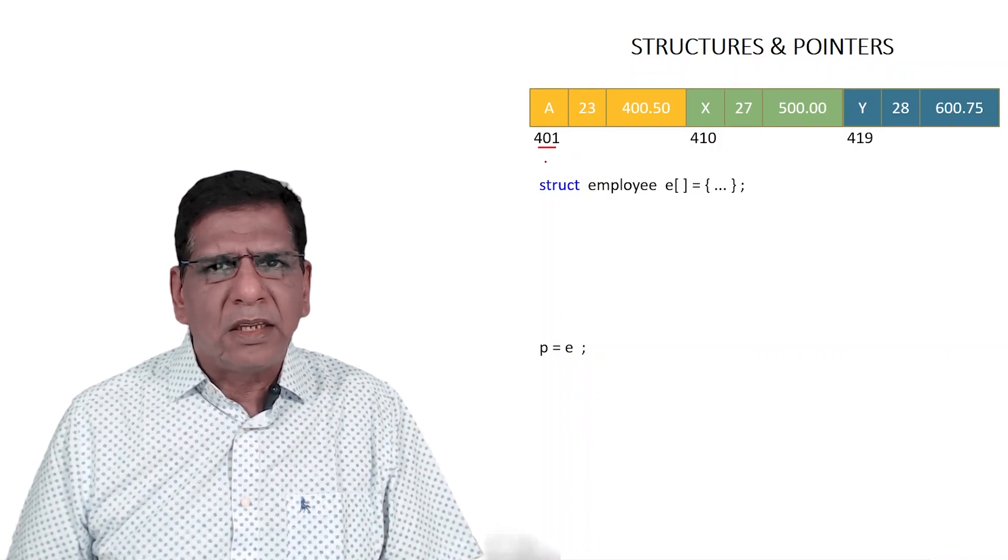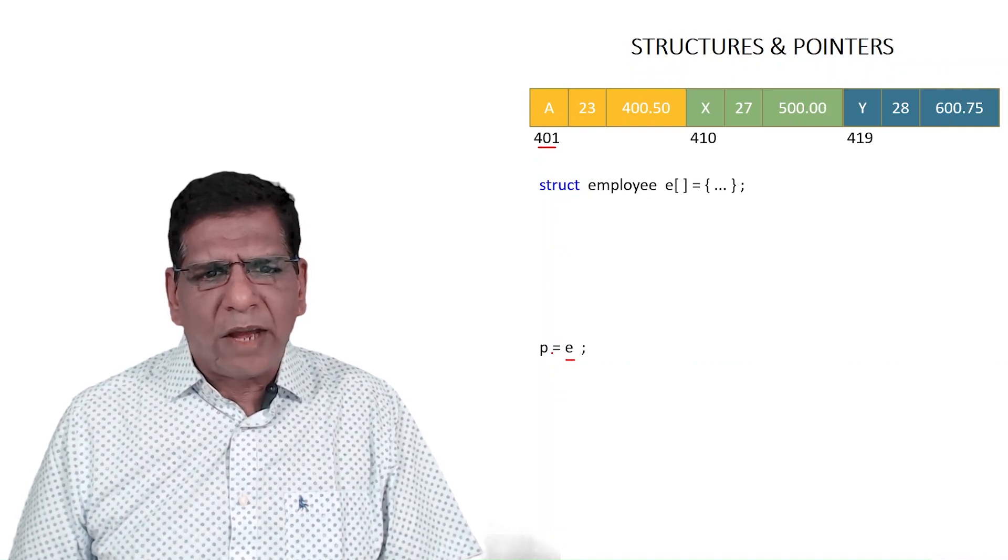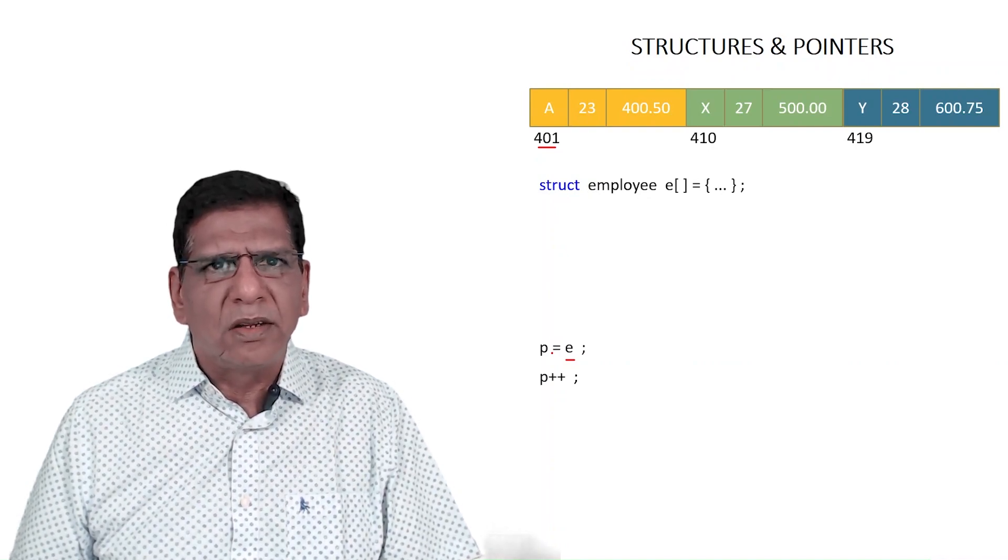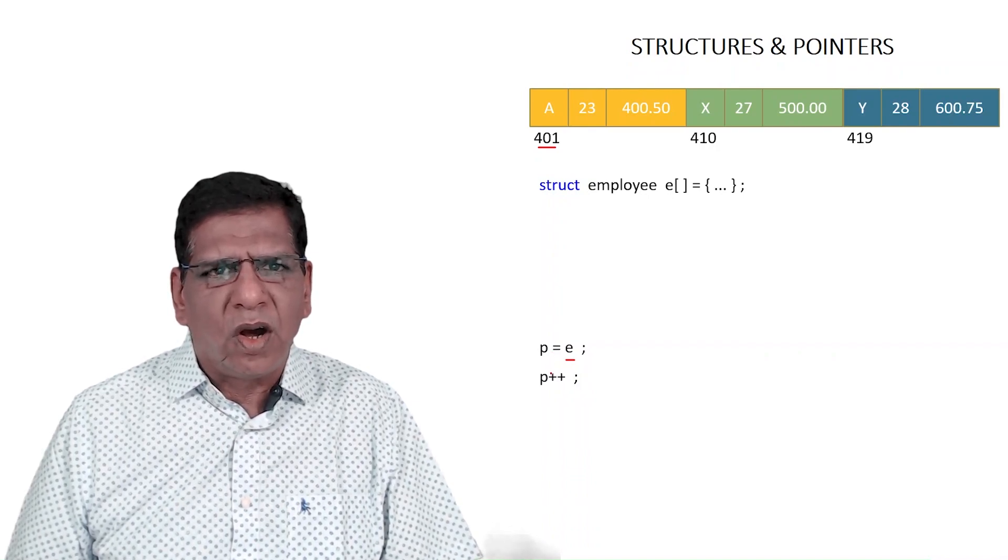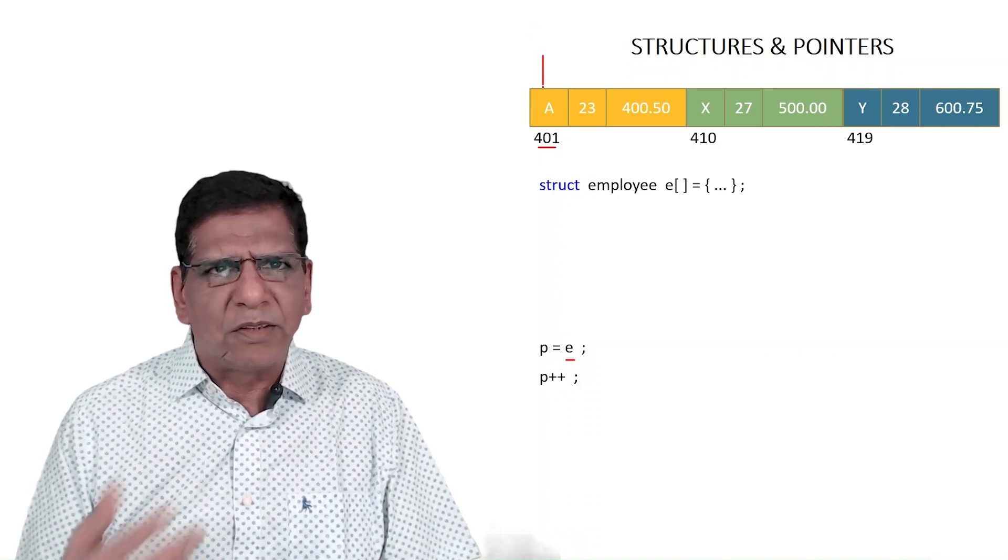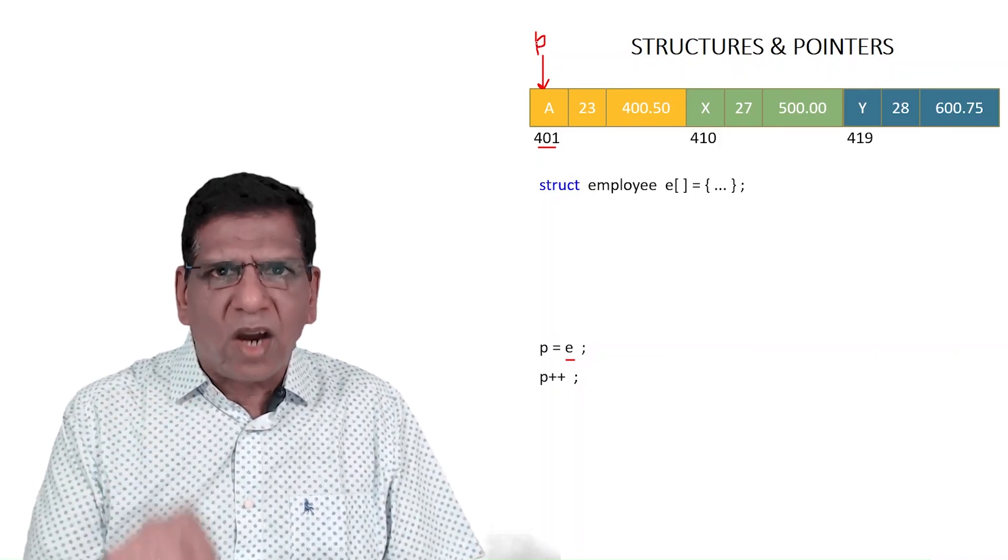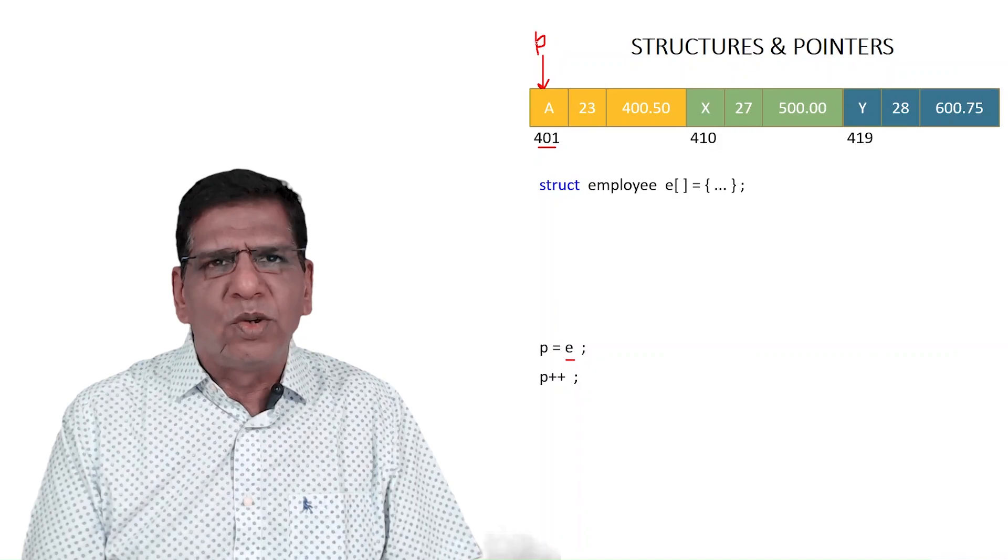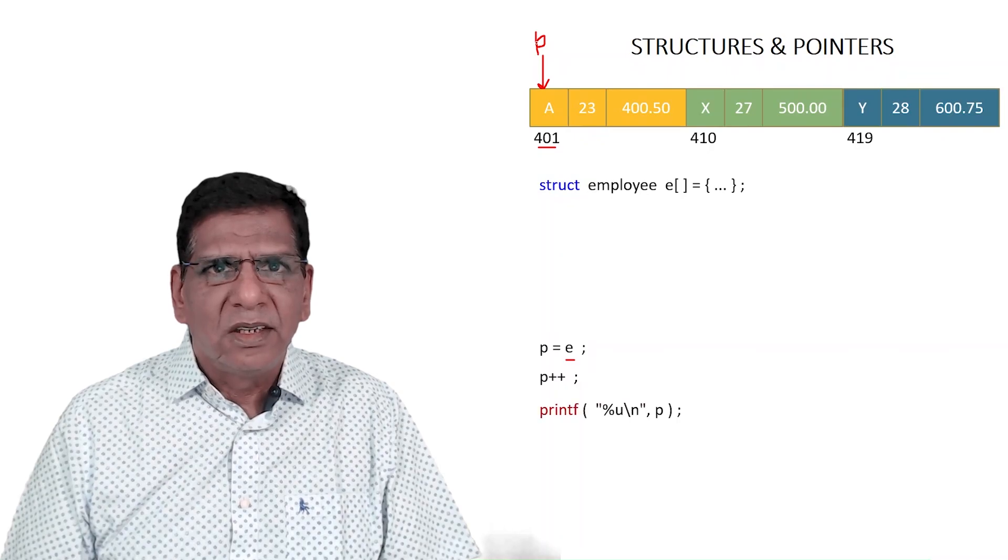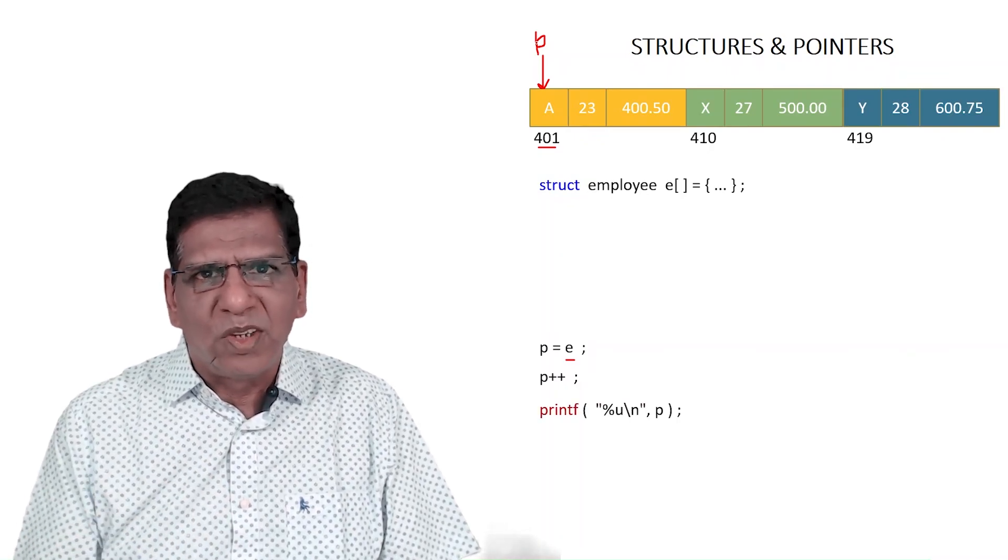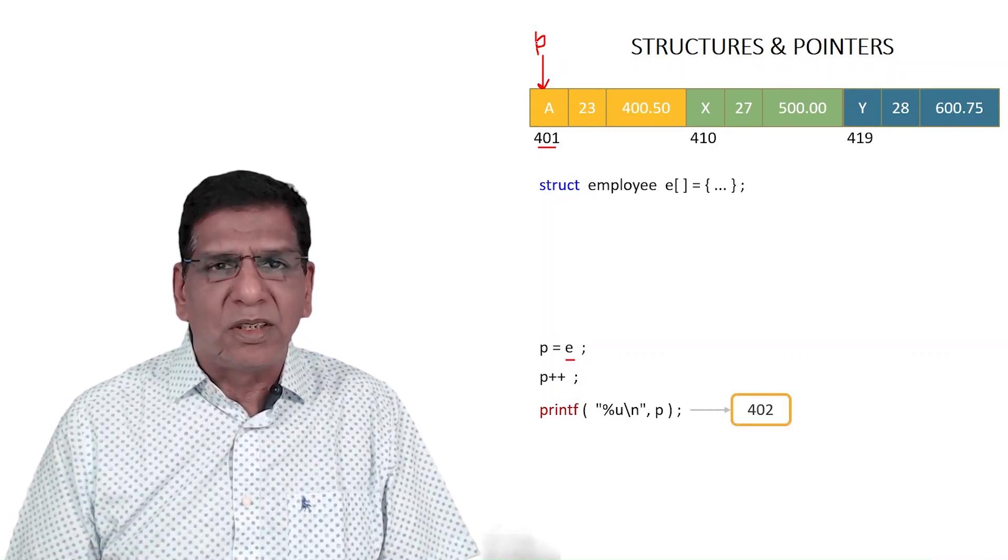If I print out the value of P, having done P++, what would it give me? Your answer could be 410 or 402. If I do P++, what I get depends upon the type of the pointer. You would not be able to tell me whether it's 402 or 410 unless I tell you what is the type of pointer P. So don't think that ++ means go to the next byte.